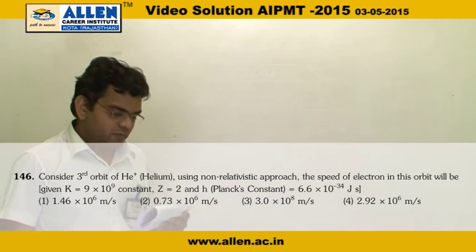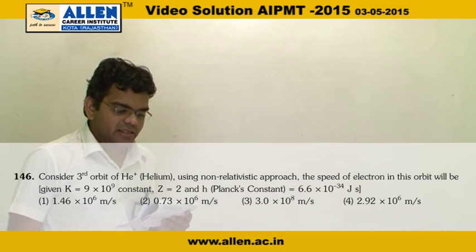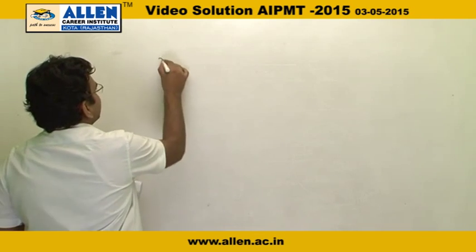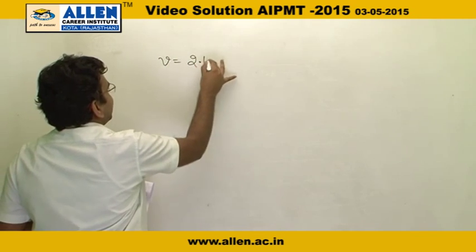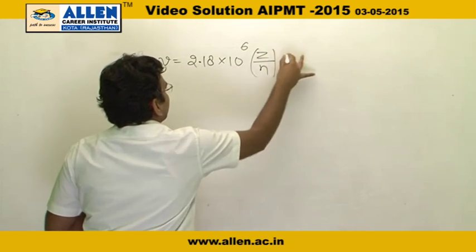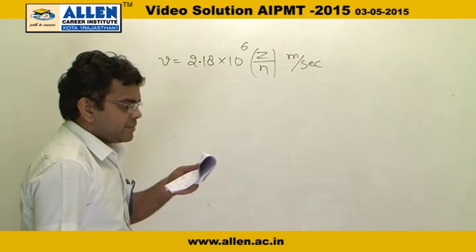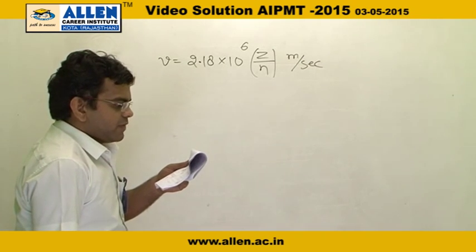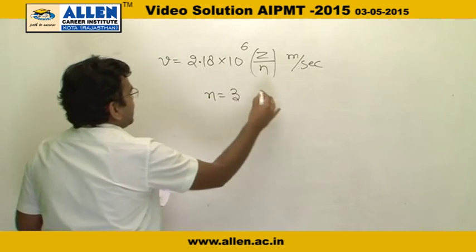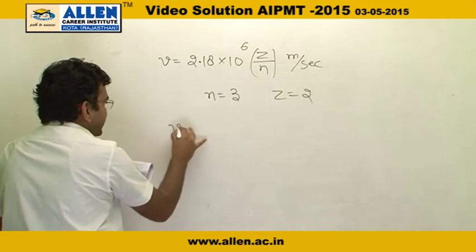Question 146: find the speed of an electron in the 3rd orbit of helium-plus (He⁺). We know that the velocity formula is v = 2.18 × 10⁶ × Z/N meters per second. Here N equals 3 and for helium Z equals 2. We put all values in and solve.